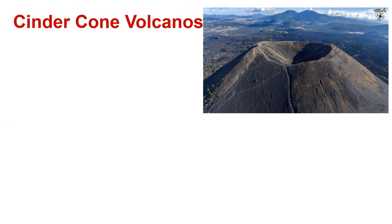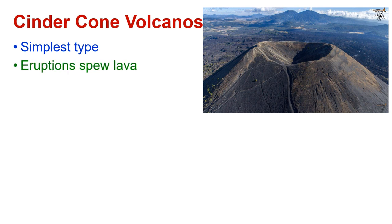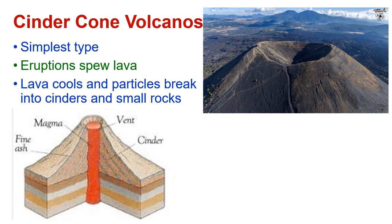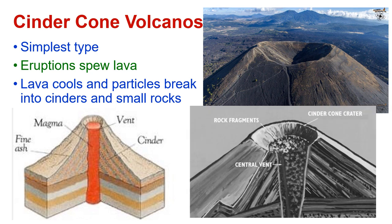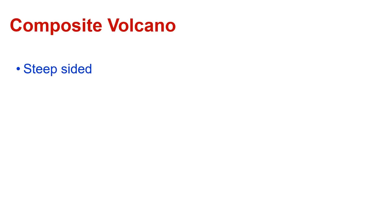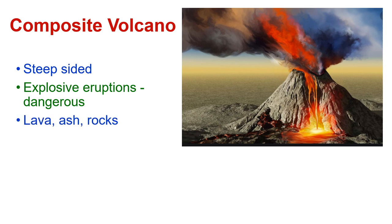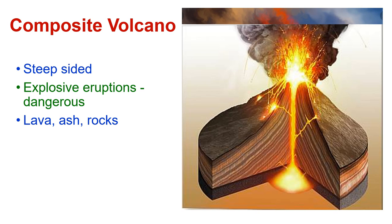Cinder cone volcanoes — they're the simplest kind. Their eruptions spew lava, the lava cools and particles break into cinders and small rocks. Here's a diagram and another diagram that shows the cinders. Composite volcanoes have very steep sides. They are very explosive and very dangerous, and out spews lava, ash, and rock. Here's another diagram — you can see the magma chamber at the bottom, and out is spewing lava, rock, and ash.